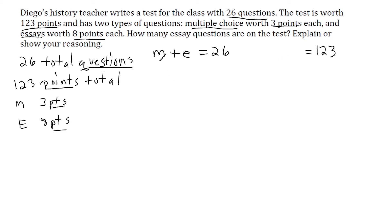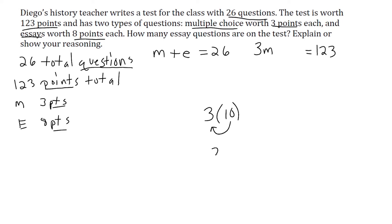M is the number of multiple choice questions and each one is worth three points. So if we take three points and multiply it by the number of multiple choice questions, that gives us the total points for multiple choice. For example, let's say we had 10 multiple choice questions out of the 26. Then we would do 10 times 3, which is 30 — a total of 30 points for multiple choice.